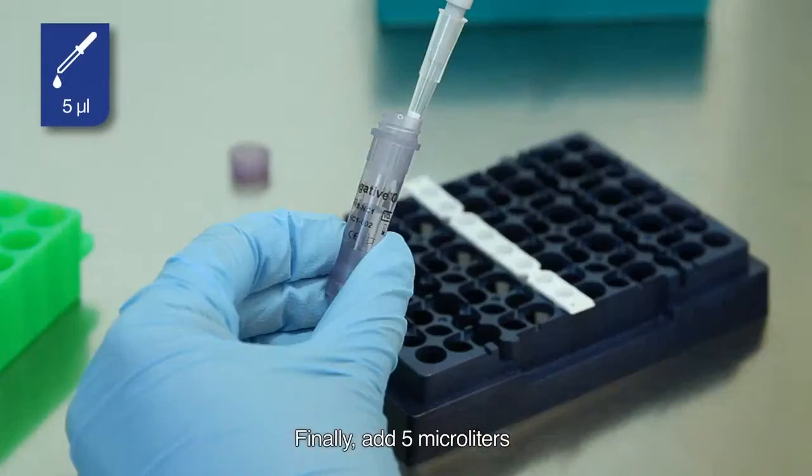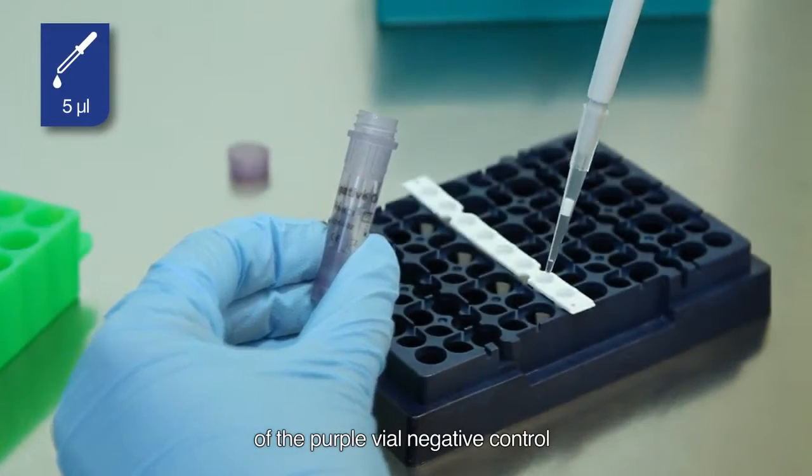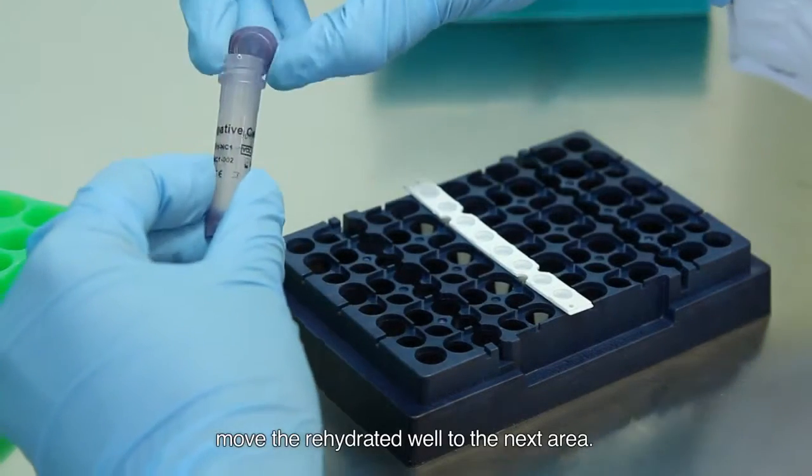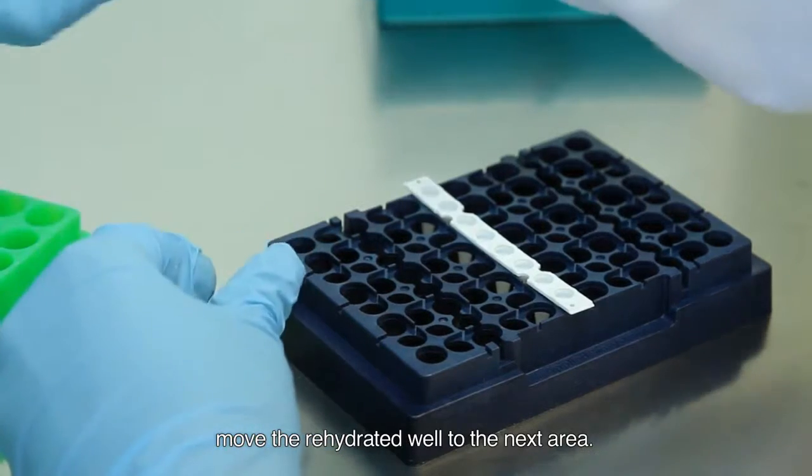Finally, add 5 µl of the purple vial negative control in the reserved well for negative control. After this process, move the rehydrated well to the next area.